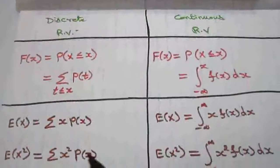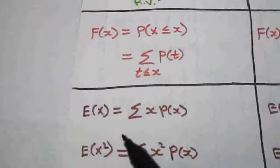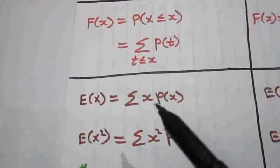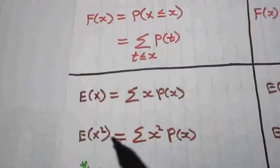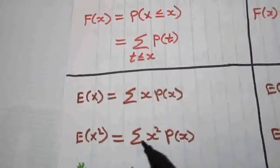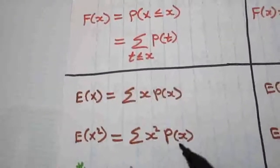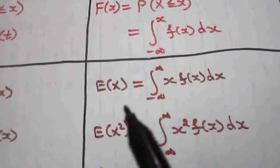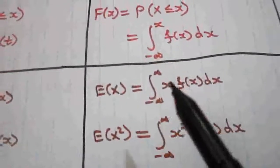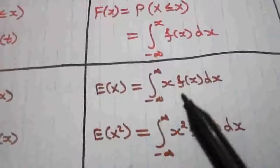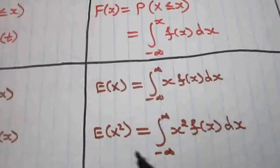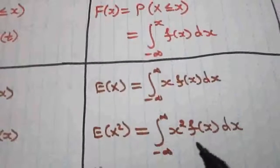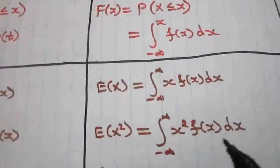The expectation of x, E(x), for a discrete random variable is the summation of x·p(x), and E(x²) is the summation of x²·p(x). For a continuous random variable, E(x) is the integral from minus infinity to plus infinity of x·f(x) dx, and E(x²) is the integral from minus infinity to plus infinity of x²·f(x) dx.